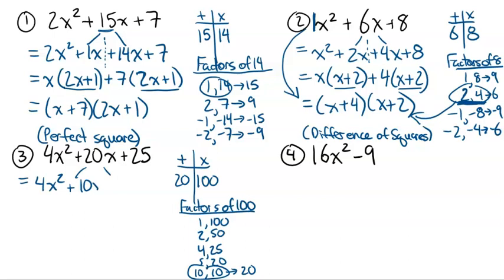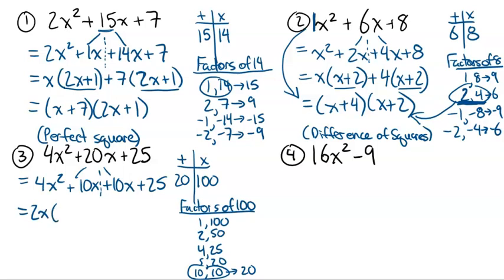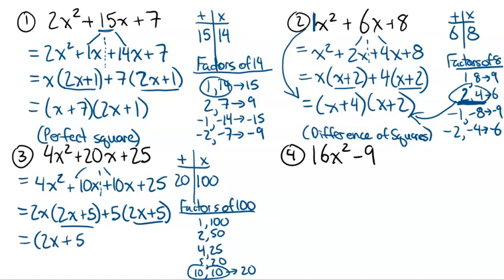So let's decompose the middle term: 4x² + 10x + 10x + 25. Now we factor by grouping. The common factor of the first two terms is 2x. Dividing 4x² by 2x gives 2x, and 10x divided by 2x gives 5 — leaving us with 2x + 5. Then if we take a factor of 5 from the last two terms: 10x ÷ 5 = 2x and 25 ÷ 5 = 5 — leaving 2x + 5 again. We have the same thing in both brackets, so we can write this as (2x + 5)(2x + 5), which is also (2x + 5)². That's why this is called a perfect square.